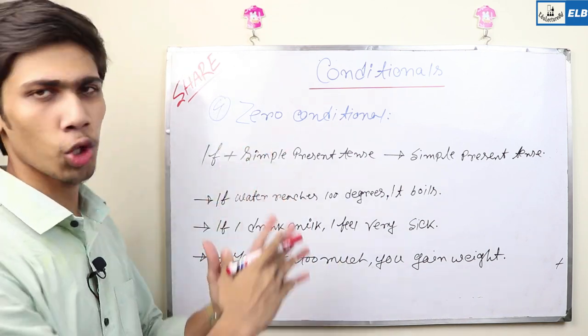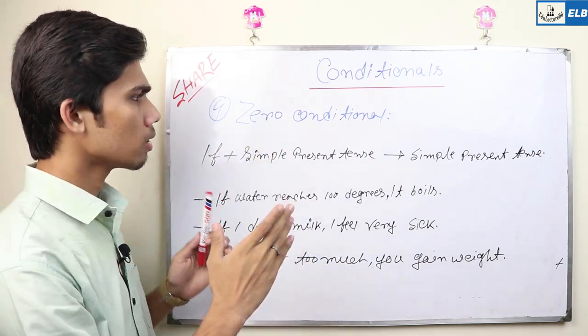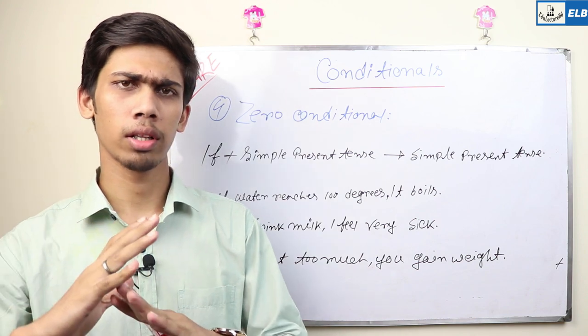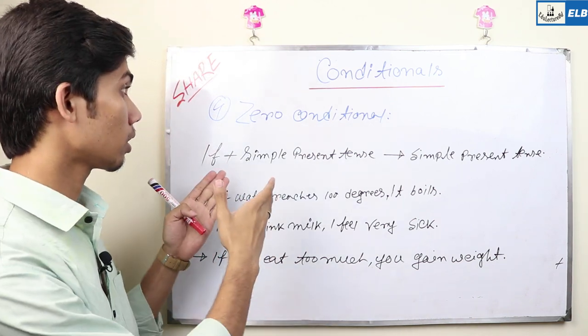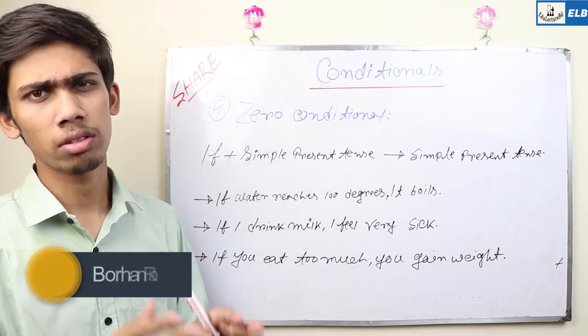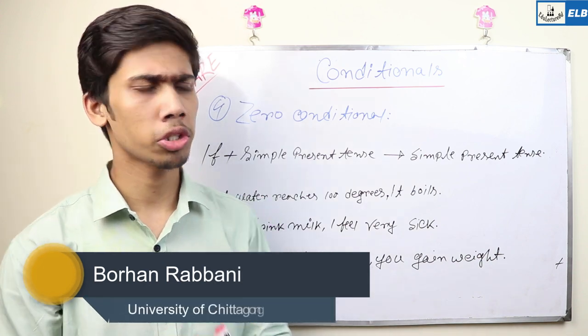So last one is zero conditional. We have three conditional, we have six conditional, zero conditional. Zero conditional is one conditional.